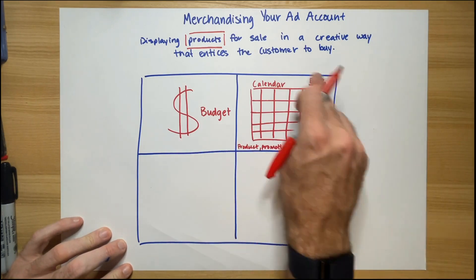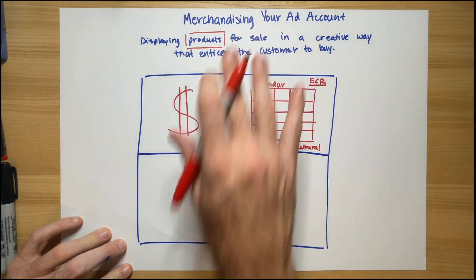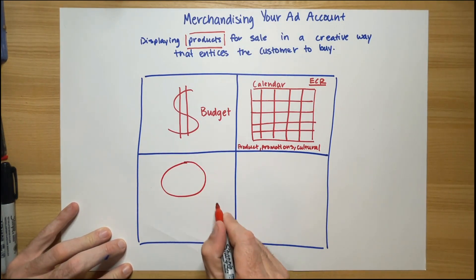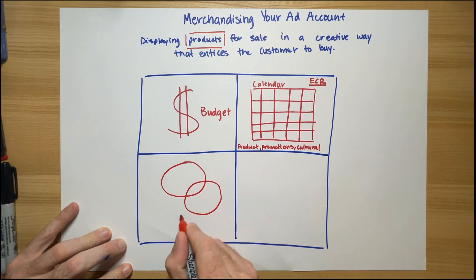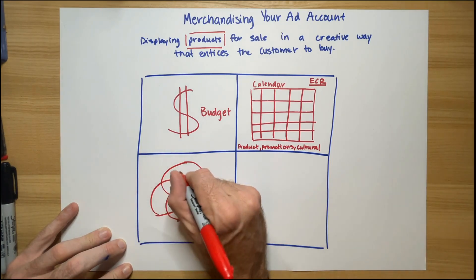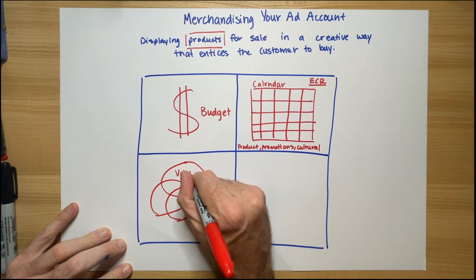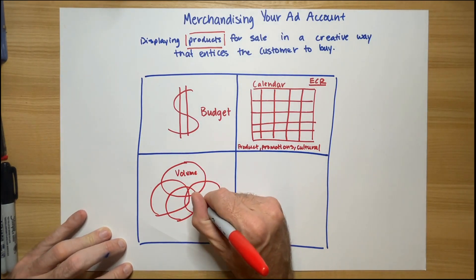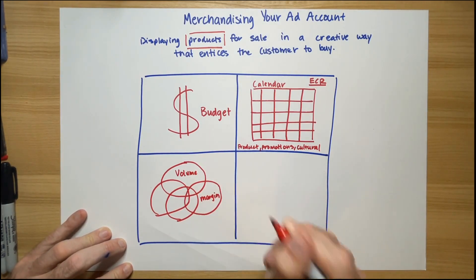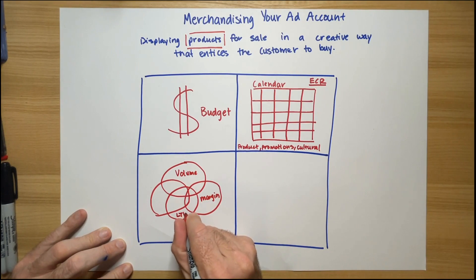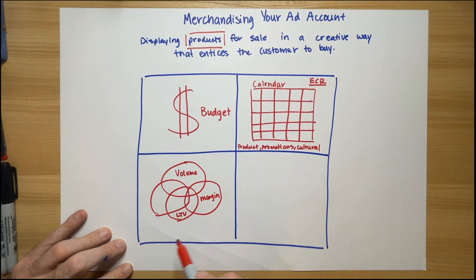Number three: if there are no calendar moments that are going to drive the answer to what you merchandise in your store window or ad account, then we have to have a consideration for evergreen. Our evergreen decisions about offers and products lie at the center of four concentric circles. Number one is volume — a consideration for what are your best-selling products, the things that customers have proven they have demand for. Number two: what are your highest-margin products — which ones make you the most money when you sell them? Number three is LTV — which products, when purchased, produce an outsized lifetime value of a customer based on that purchase?